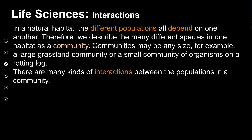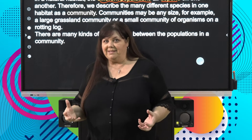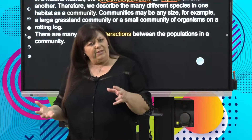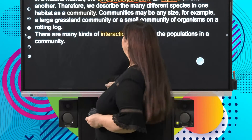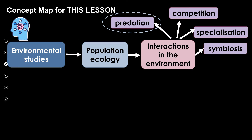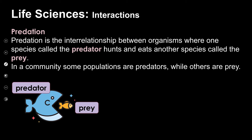In a natural habitat, different populations are going to depend on one another. Some are going to eat others, and some are going to rely on others for other things we'll be exploring in this lesson. These different populations — our community — will be full of wonderful interactions that we need to isolate. It makes sense to put these in different groups. We're going to start with our first kind of interaction: predation.